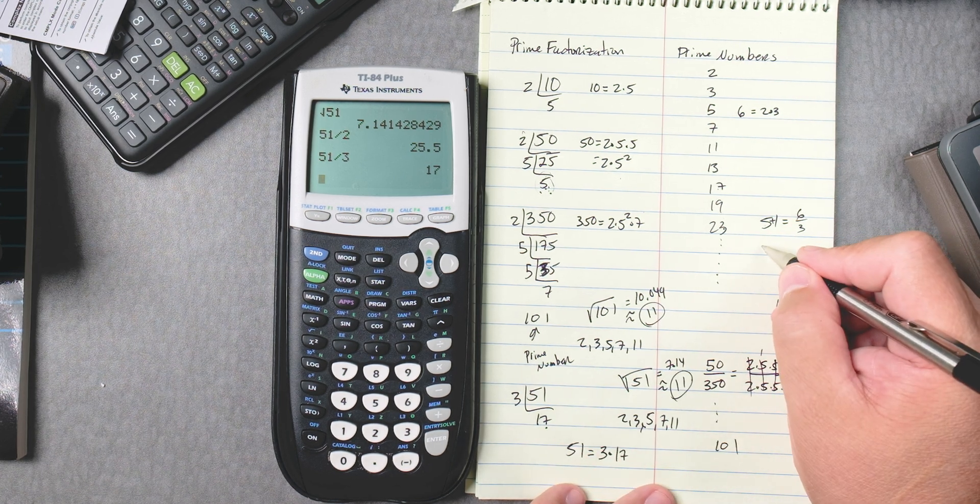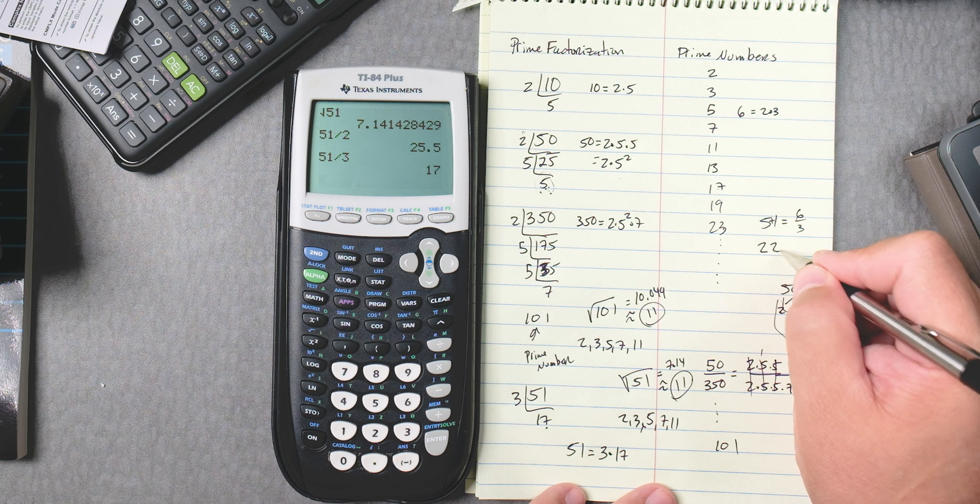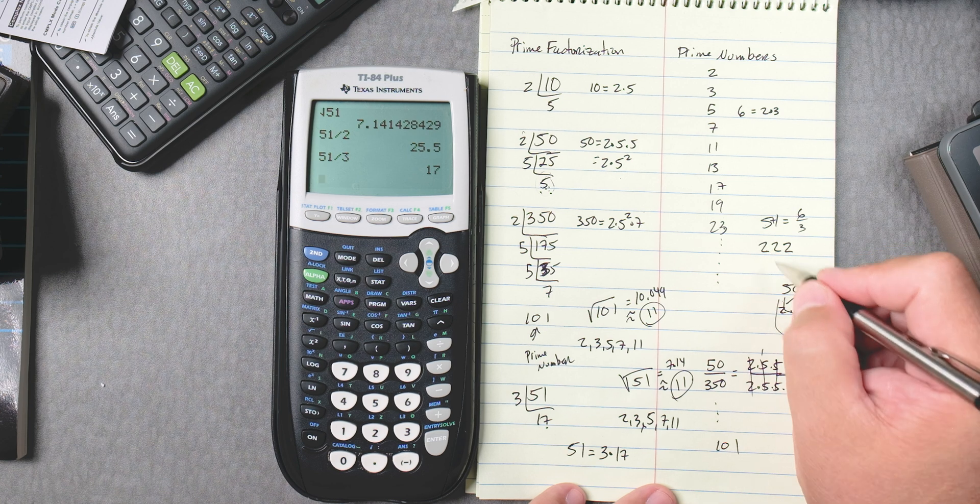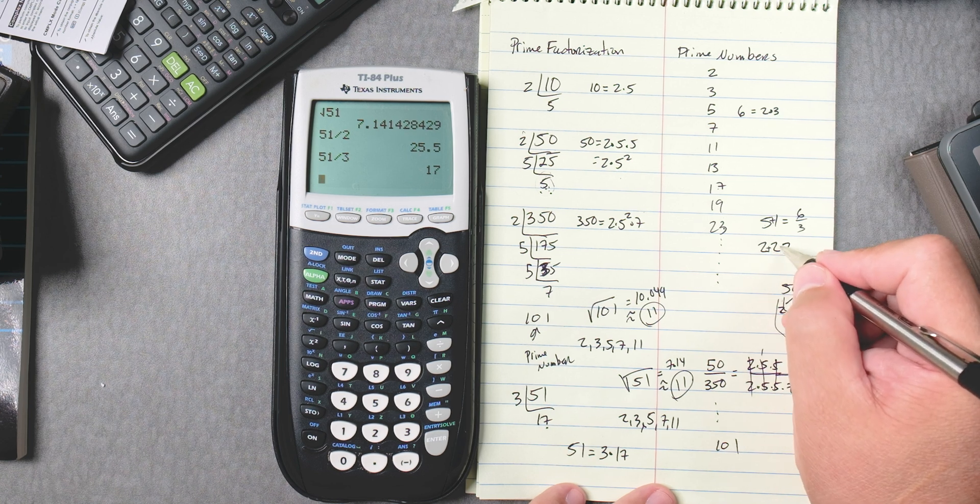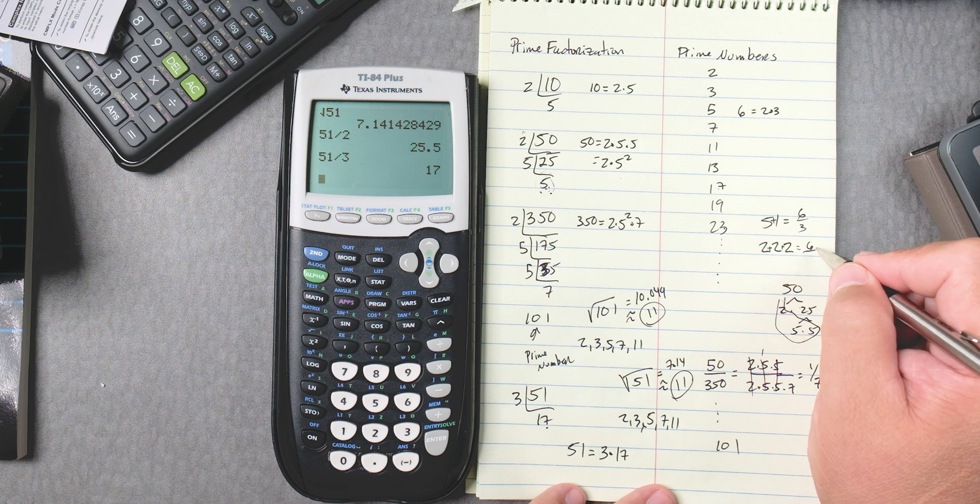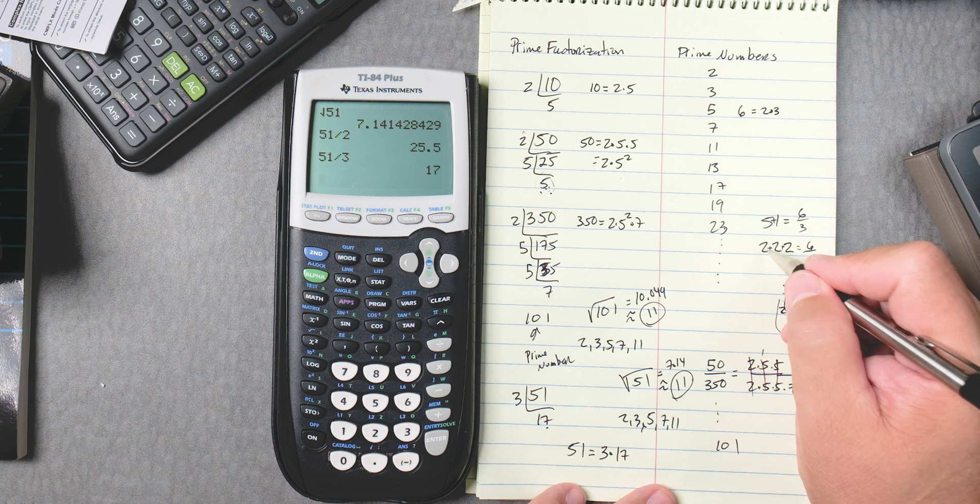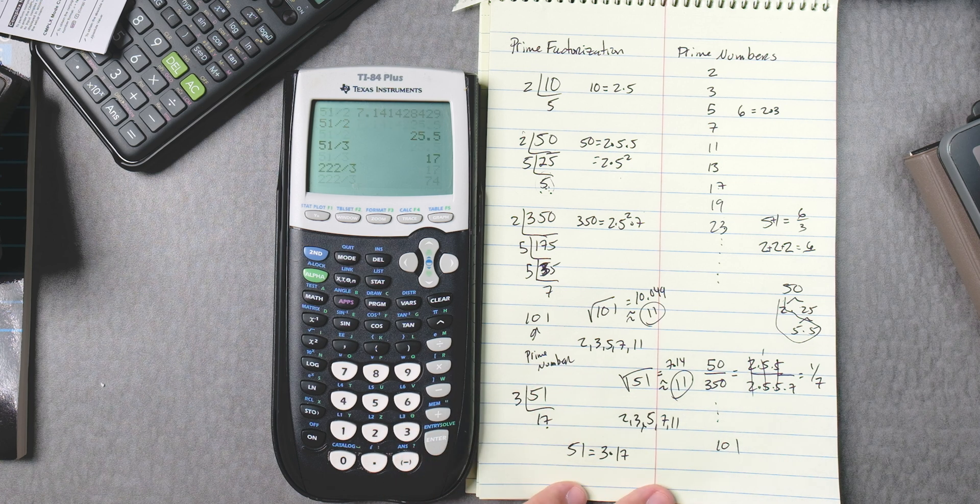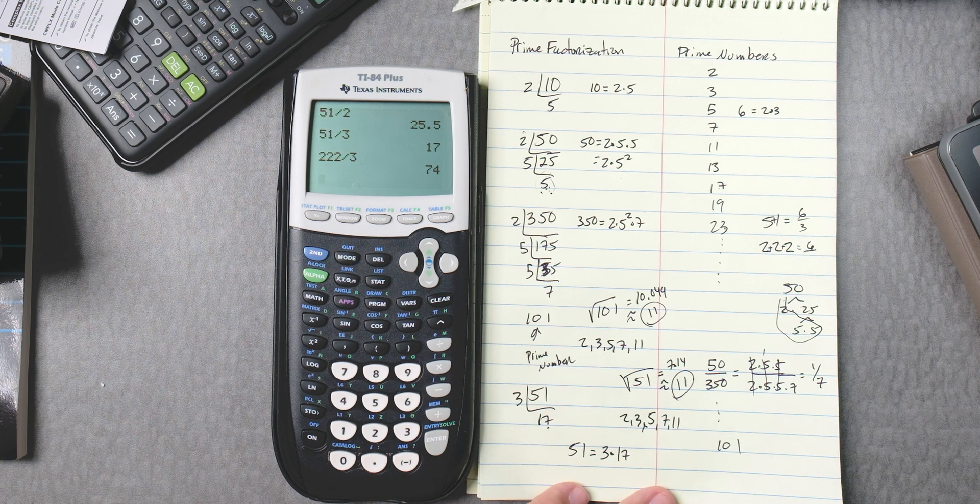You see, if you have something like 222222, 2 plus 2 is 4 plus 2 is 6. We know 3 goes into 6. That means 3 goes into 222222. 222222 divided by 3, 74074.